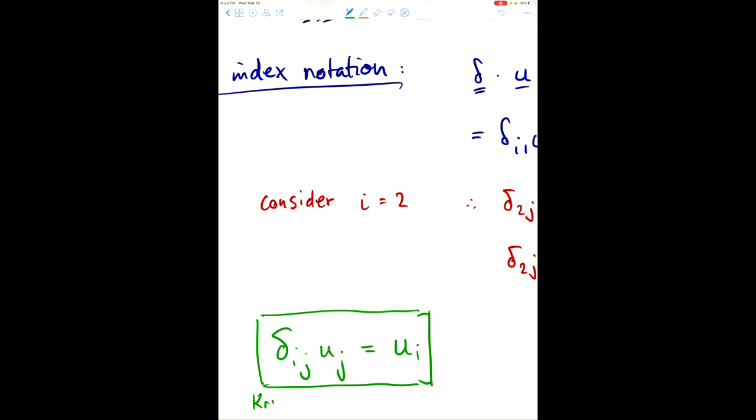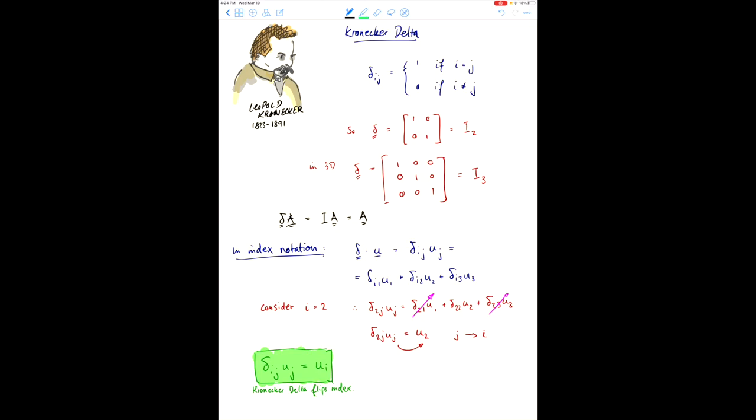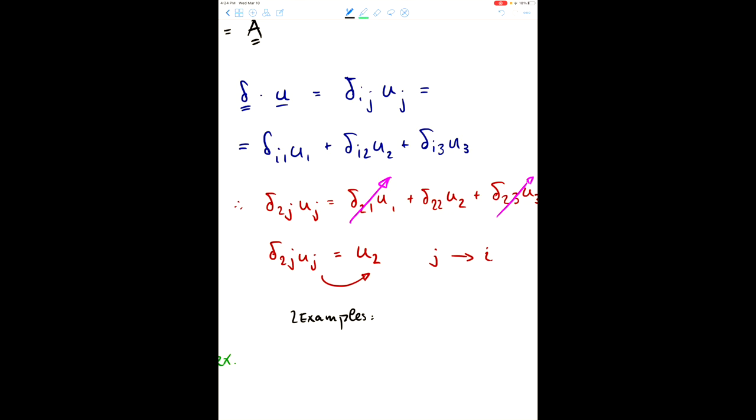So, the Kronecker Delta flips the index. And there are two examples that I just want to mention quickly here. The first one is the special case of delta ii. So, now we have repeated indices, so the Einstein summation is understood. So, this corresponds to delta 1, 1 plus delta 2, 2 plus delta 3, 3. And each one of these is 1. So, this really is 1 plus 1 plus 1 is 3.